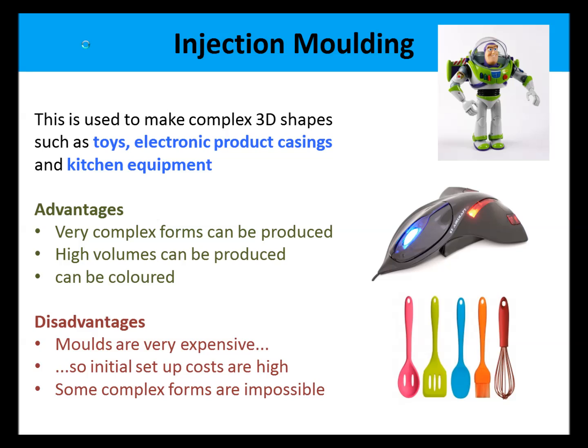The first process is injection molding. This is used to make complex 3D shapes such as toys, electronic product casings and kitchen equipment. The advantages are that complex forms can be produced, high volumes can be produced, and colour can be built into the part. The disadvantages are that the steel moulds are very expensive to manufacture, setup costs are very high, and some very complex shapes are impossible to manufacture.